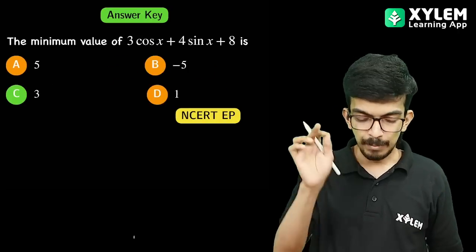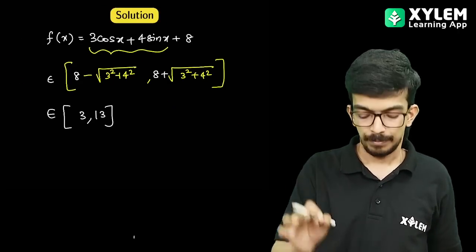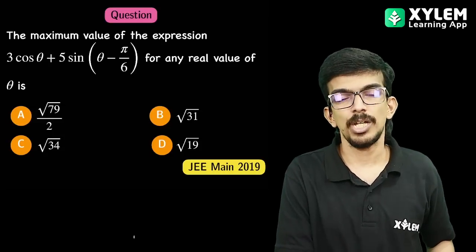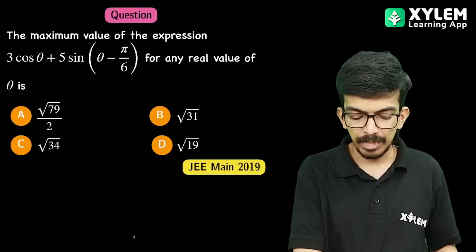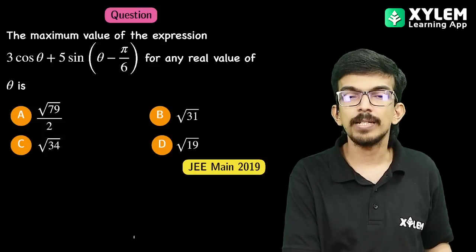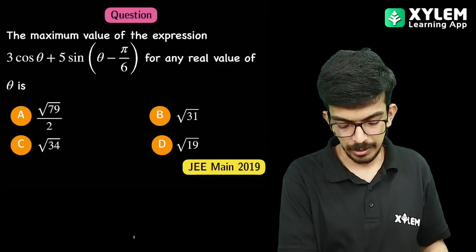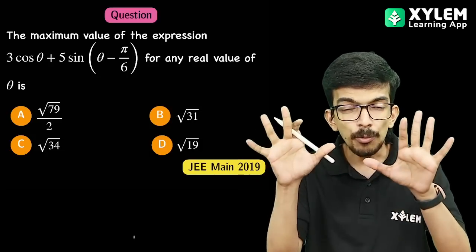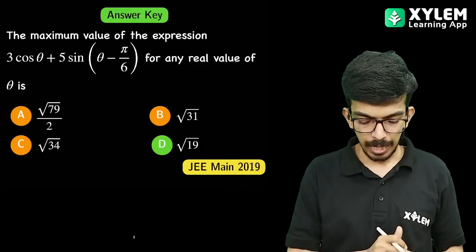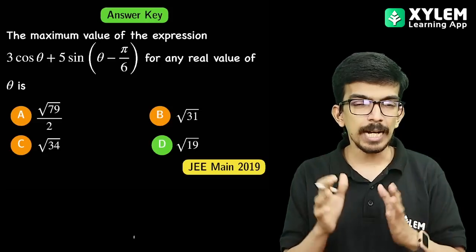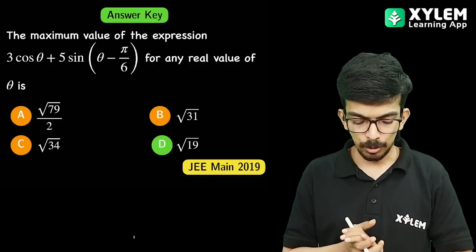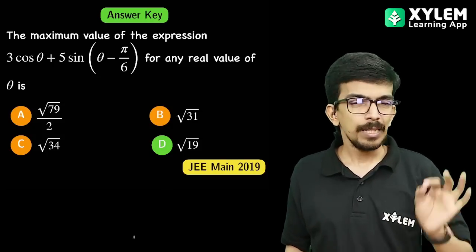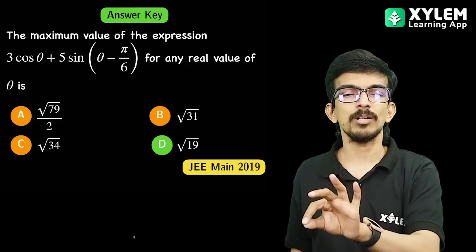The next question: the maximum value of the expression 3 cos theta plus 5 sin(theta minus 5π/6) for any real value of theta. D is our correct answer. Let's work through it — the standard form is a sin theta plus b cos theta.